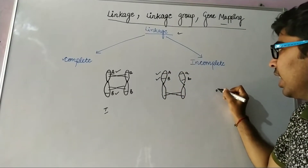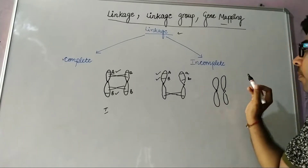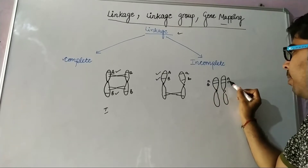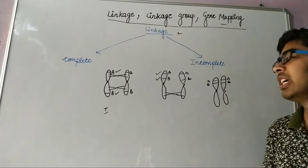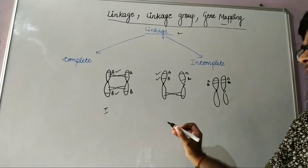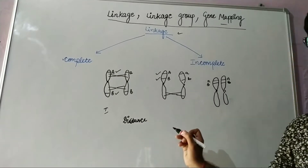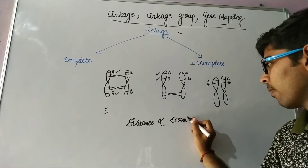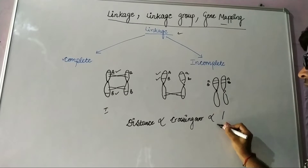In the third case, when genes A and B are very closely associated with each other — this is A, this is B, and its homolog has A and B — the chances of recombination frequency are very very less and these genes will stay together during gamete formation. So we can say that the distance between two genes is directly proportional to crossing over.